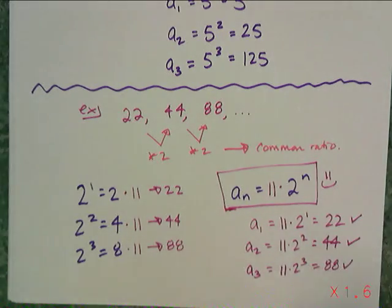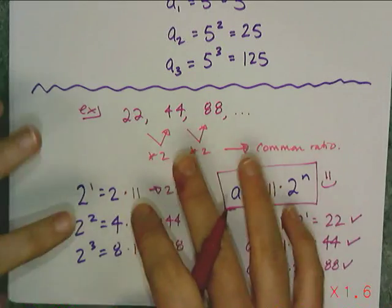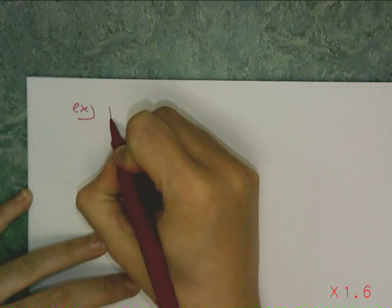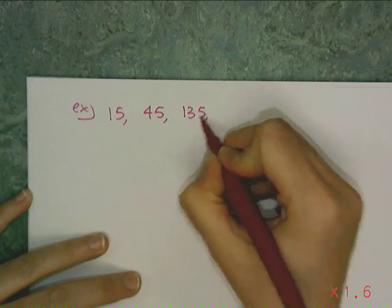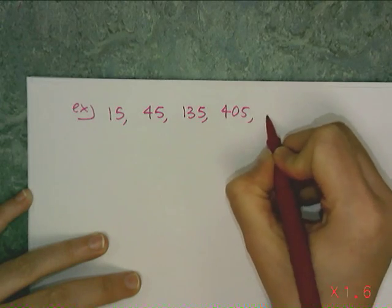So that means I can put a big happy face next to the sequence as a parent formula because it's right. So let's do another one. Something that's a little less obvious. So let's look at the sequence 15, 45, 135, 405, dot dot dot.